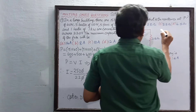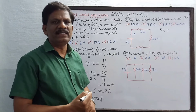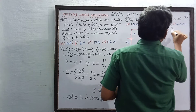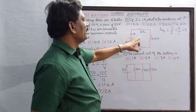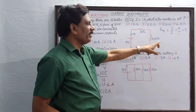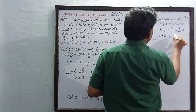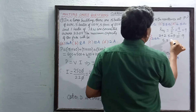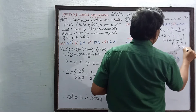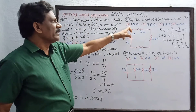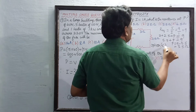From Ohm's law, R equivalent equals V divided by I, which is 9 divided by 1 equals 9 ohms. Adding the 3 series resistors: 3 plus 2.5 plus P equals 9. So 5.5 plus P equals 9, therefore P equals 9 minus 5.5, which is 3.5 ohms. Option C is the correct answer.